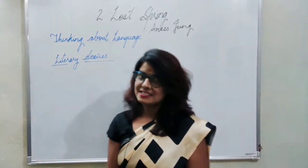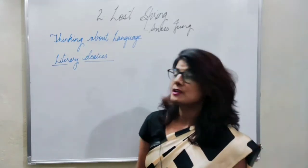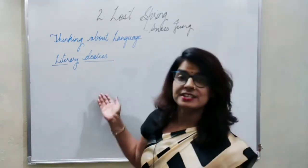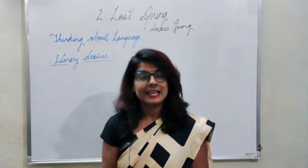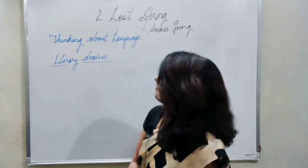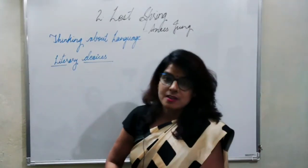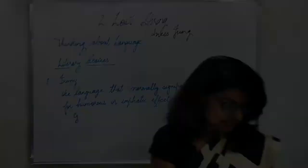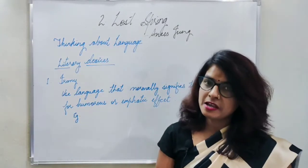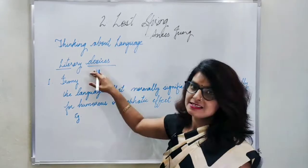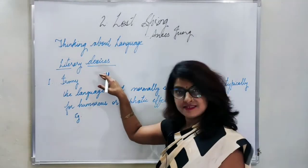Hello everyone. In this video you are going to get an elaborate explanation of literary devices used in the sentences given in exercises of the second lesson of 'Lost Spring' or 'Thinking About Language.' We are on page number 21, Thinking About Language, and we are going to do the exercise based on literary devices.